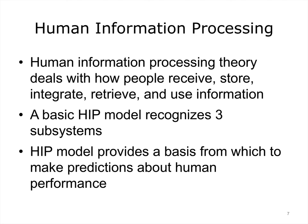Human information processing theory deals with how people receive, store, integrate, retrieve, and use information. The basic model recognizes three subsystems: a perceptual system that processes incoming sensory information, a motor system that controls action and physical behavior, and a cognitive system that provides the processing connecting the two. We will briefly deal with different dimensions of these subsystems.